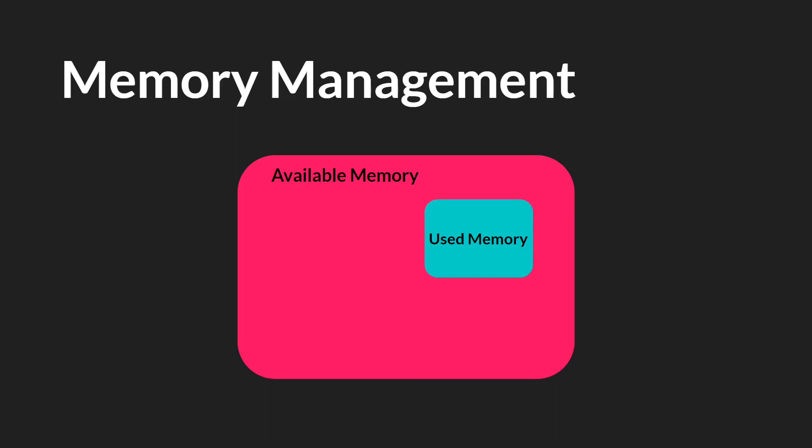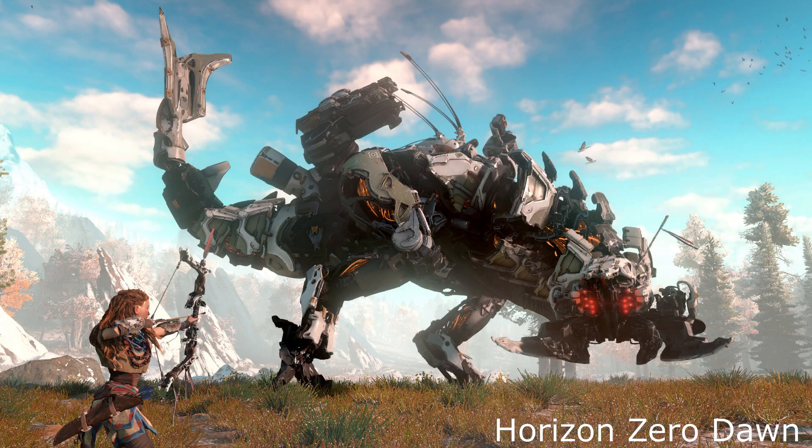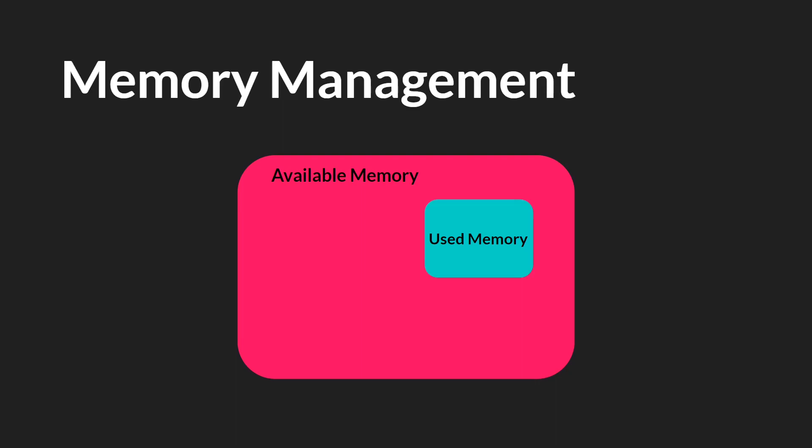Now in most modern languages, allocating and deallocating memory — taking and freeing memory — is done automatically, and this is true with GameMaker. However, in many older languages and some modern languages, memory management is not automatic; you have to do it manually. And if that sounds like extra work, it definitely is, but it comes with a big advantage. The big advantage to manual memory management is that your programs are a lot more efficient and faster. And if you're making a AAA game that looks like this, that's probably really important. However, for most indie games, efficiency and speed is less important than just being able to make it, and so automatic memory management is really nice.